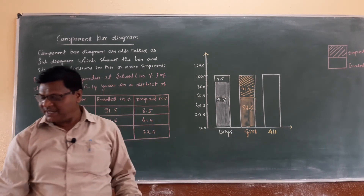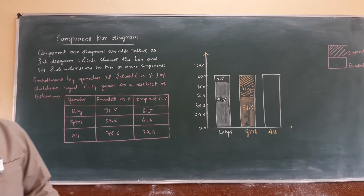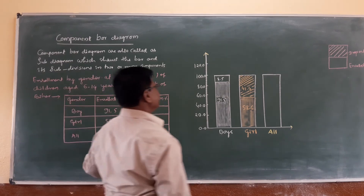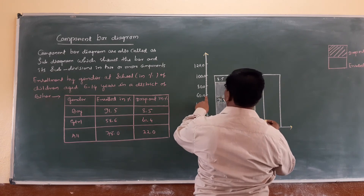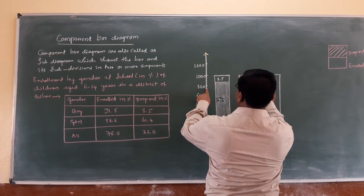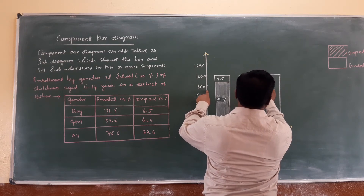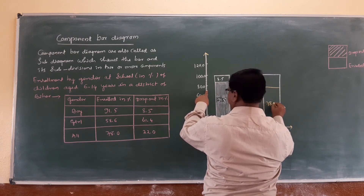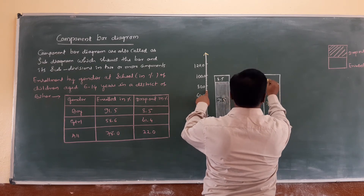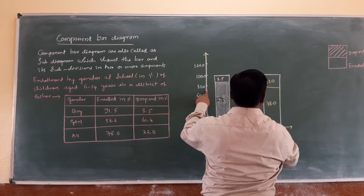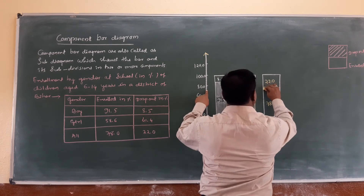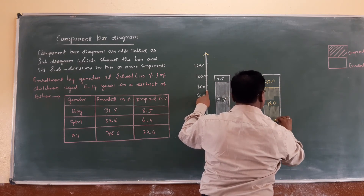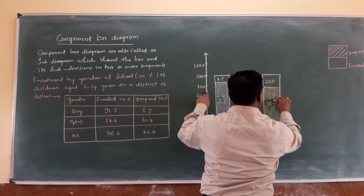The last bar is for all — that is all boys and girls combined. The enrolled percentage for all is 78.0 — mark 78 on the axis between 70 and 80. The remaining 22.0 is dropout. So 78.0 is enrolled and 22.0 is dropout. This is called the component bar diagram.